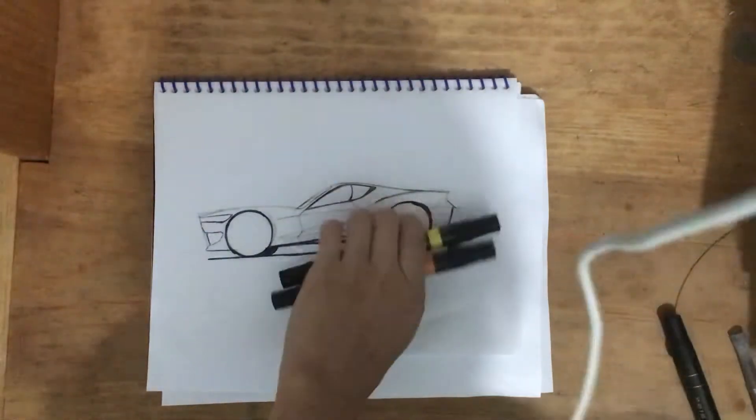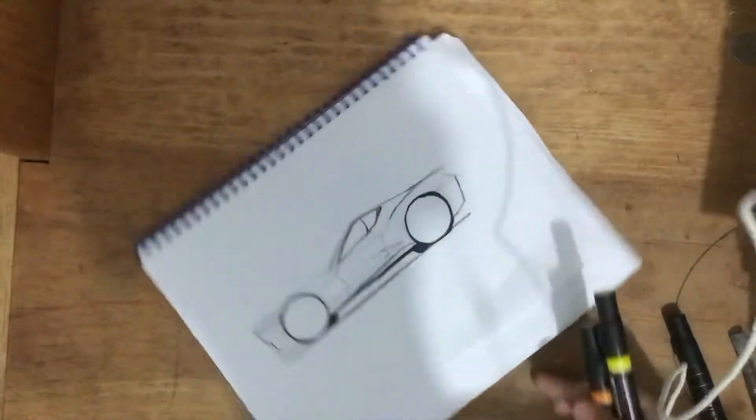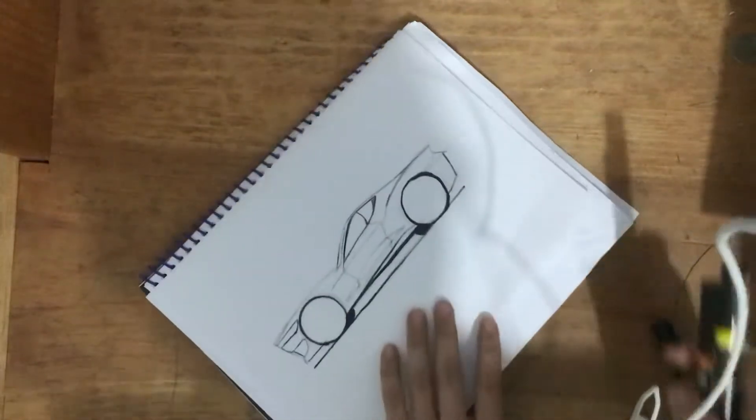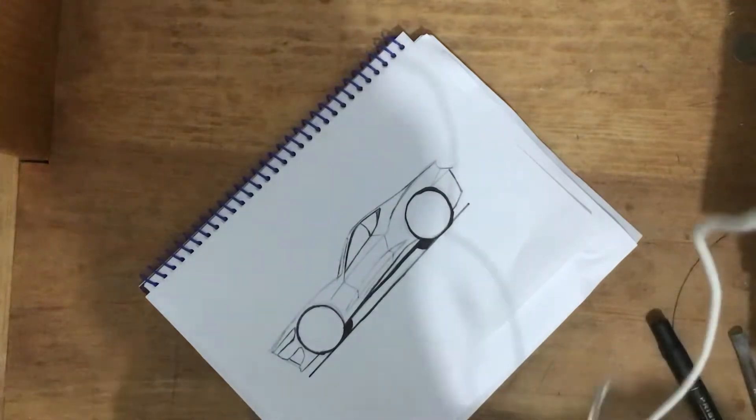Welcome to today's video where I'm going to show you how to color a car with markers. This is the easiest way possible in a side view. As you can see I have a sketch laid down which I'm going to color.